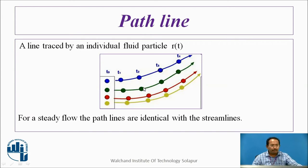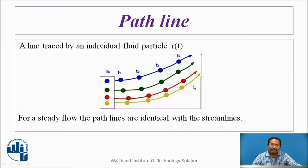First, we will see the path line — a line traced by an individual fluid particle. These are the stations, shown as colored points, and a dye is sent through them. The particles move from these points, and the line traced by these points is called the path line.